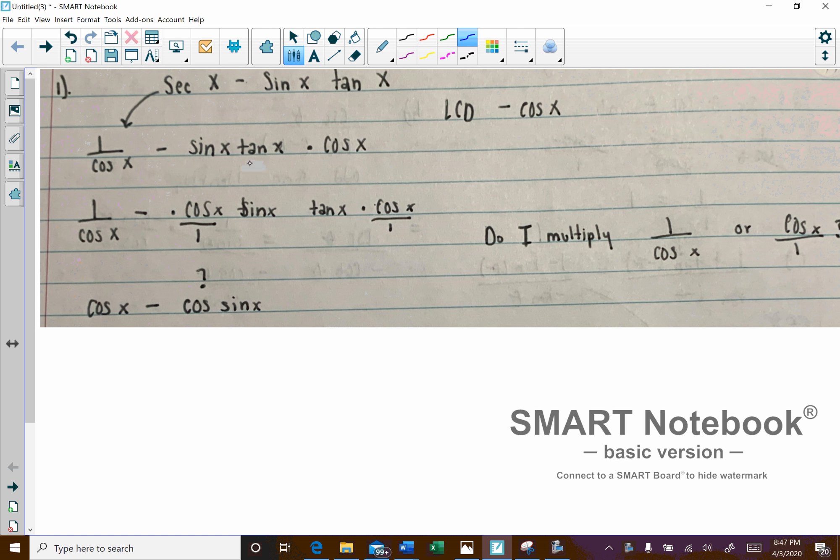Now, in order to do this, we want to get a common denominator. Tangent, we should be able to turn that into sine over cosine, and we should actually have an LCD. So what I'm going to do is go ahead, let's not worry about this, let's go down here.